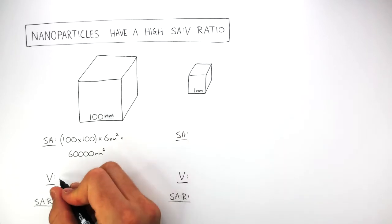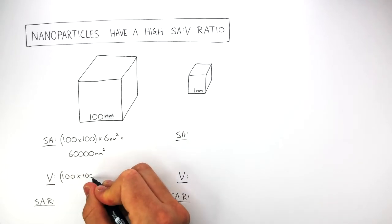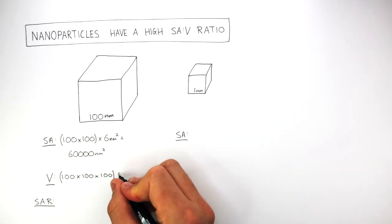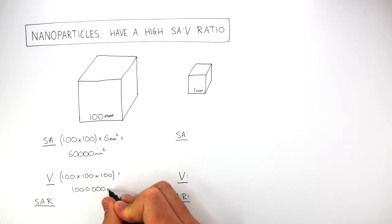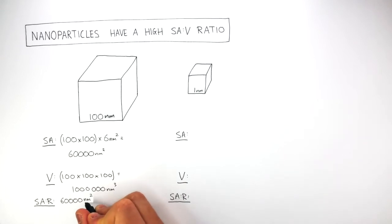The volume is 100 times 100 times 100. This equals 1 million cubic nanometers. So the surface area to volume ratio is 60,000 square nanometers to 1 million cubic nanometers. This gives a surface area to volume ratio of 0.06 per nanometer.